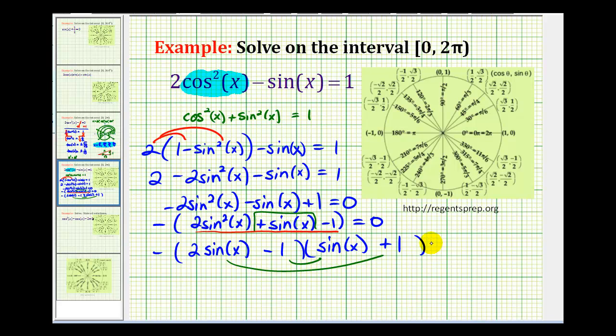And this product must equal zero. So the solutions will occur when 2sin(x) - 1 = 0, or when sin(x) + 1 = 0.